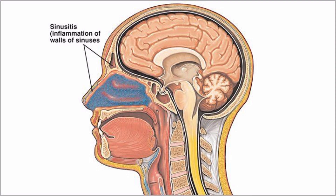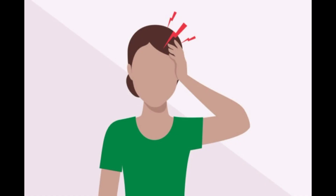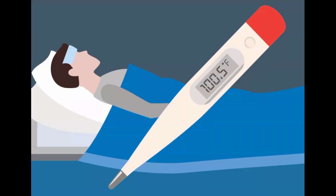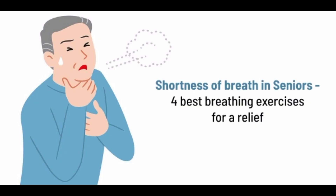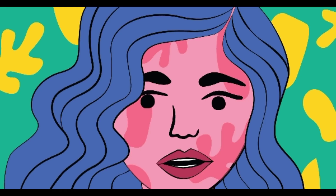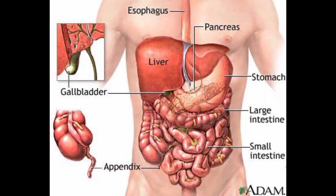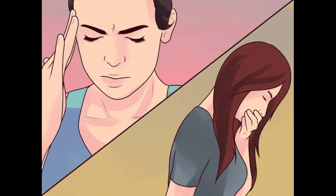There is rhinocerebral mucormycosis, which generally affects the sinus and brain. Symptoms include one-sided facial swelling, headache, nasal or sinus congestion, black lesions on the nasal bridge or upper inside of the mouth that quickly become more severe, or fever. Pulmonary mucormycosis symptoms include fever, cough, chest pain, or shortness of breath. Cutaneous mucormycosis involves skin patches, pain, warmth, excessive redness, or swelling around a wound. Gastrointestinal mucormycosis can cause severe abdominal pain, vomiting, nausea, and gastrointestinal bleeding.